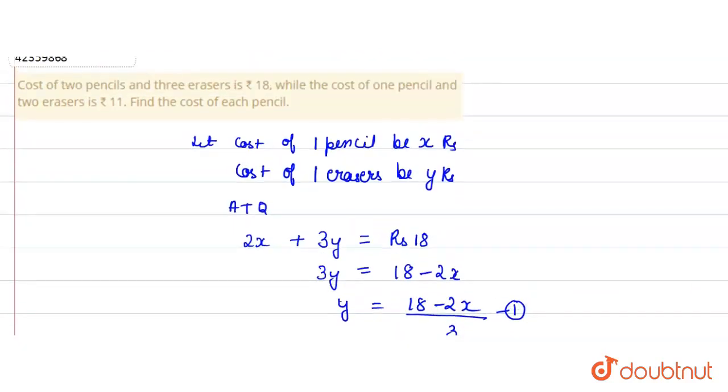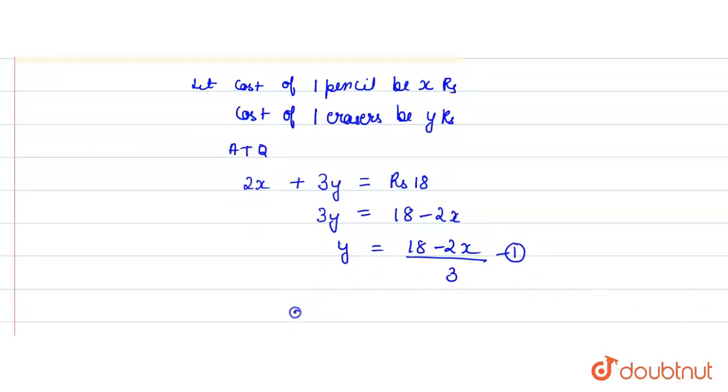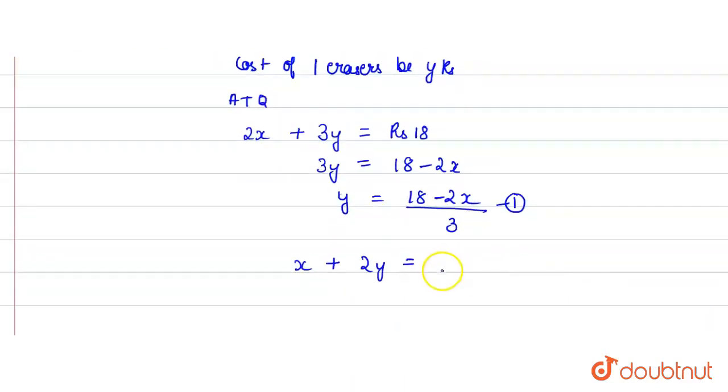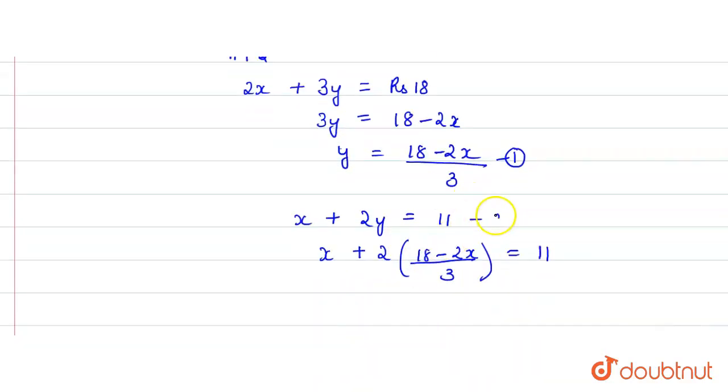Now, cost of 1 pencil and 2 erasers: 1 pencil is x rupees, 2 erasers is 2y, equals 11. So x + 2y = 11. Substituting y = (18 - 2x)/3 into this equation.